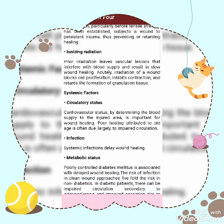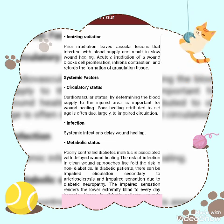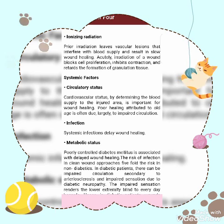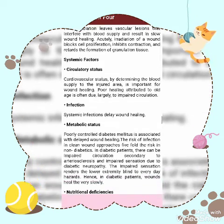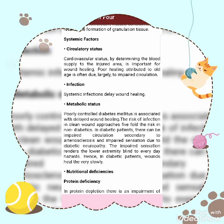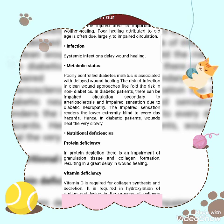Systemic factors of wound healing: first, circulatory or cardiovascular status — determining the blood supply to the injured area is important for wound healing. Poor healing attributed to old age is often largely due to impaired circulation and chronic infection. Systemic infection delays wound healing.